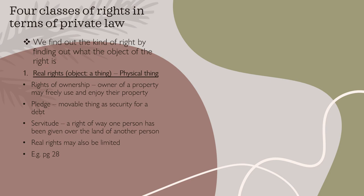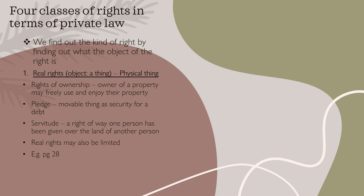Then we have personality rights, which is personality property — the right of physical integrity. We all have the right to our own bodies. You have the right to say whether or not you want someone to touch your body, the right to tattoo your body, the right to do piercings on your body, because you have the right to your own body. This includes the right to your good name, a right to reputation, and the right to your honor.